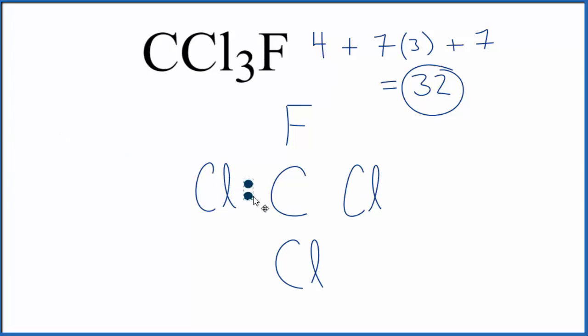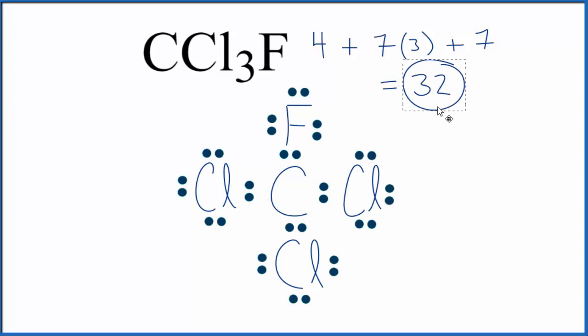Let's put a pair of electrons between atoms. This forms the chemical bond between the atoms, and then we'll complete the octets for all of these atoms. So at this point, we've used all 32 of our valence electrons. If you count all of these up, we've used all 32. Each atom has an octet, has 8 valence electrons. This is the Lewis structure for CCl3F.